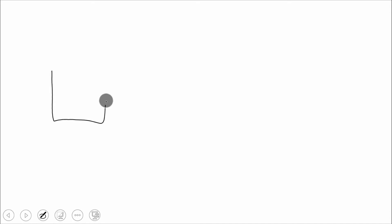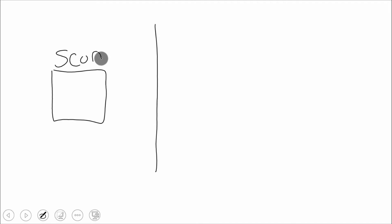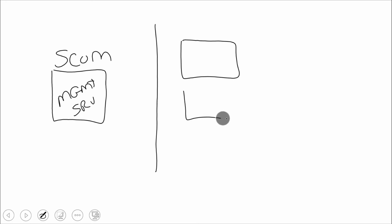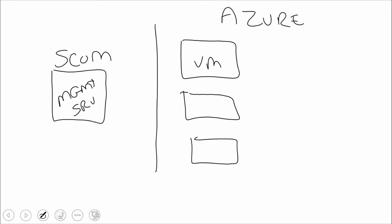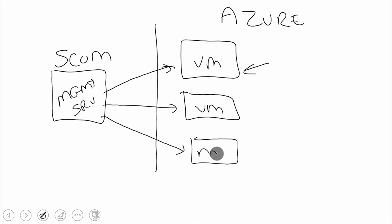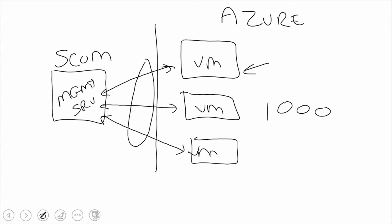One thing to watch out for when using System Center is that it is heavily reliant on agents. If we look at a diagram of a big infrastructure setup, typically a customer will already have SCOM installed with a management server on-premises, and then they have new stuff in Azure they want to start monitoring — VMs spinning up that need agents on them in order to talk back to the management server. We can deploy agents through a variety of mechanisms. But if we start having a thousand VMs, what's going to happen to that bandwidth coming back on-premises? There's too much data flowing back and forth — we're going to have a problem.